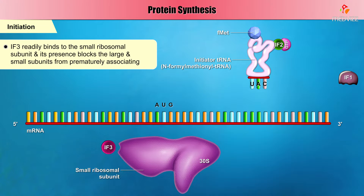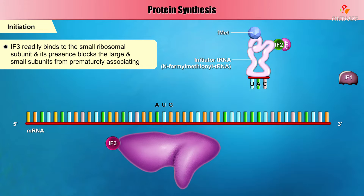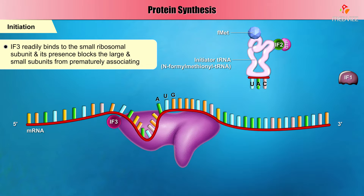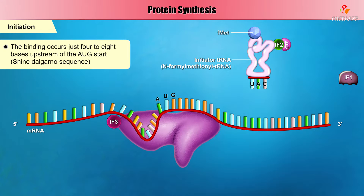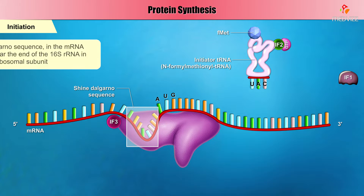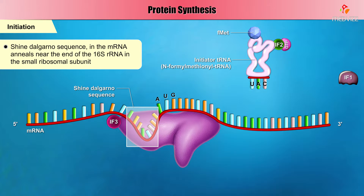IF3 readily binds to the small ribosomal subunit, and its presence blocks the large and small subunits from prematurely associating. IF3 facilitates the binding of the mRNA to the small subunit of the ribosome. The binding occurs just four to eight bases upstream of the AUG start, where a consensus sequence called the Shine-Dalgarno sequence in the mRNA anneals near the end of the 16S ribosomal RNA in the small ribosomal subunit.